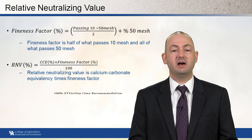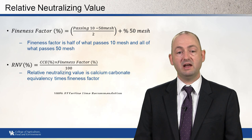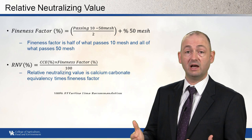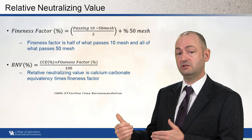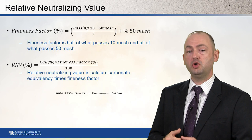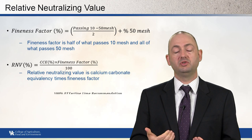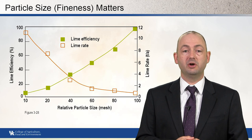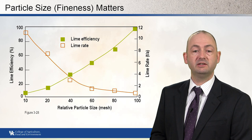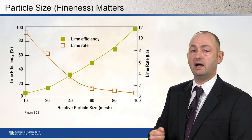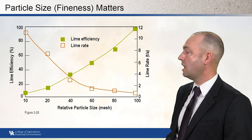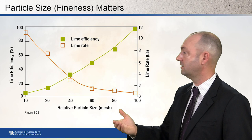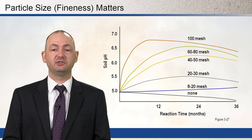The Relative Neutralizing Value (RNV) equals the CCE times the fineness factor, divided by 100. To get the bulk lime rate, we take 100% times the 100%-effective lime recommendation — derived from soil pH and buffer capacity — and divide it by the RNV. If using pure calcium carbonate (RNV = 100), you add the amount of the effective lime recommendation. If using something with an RNV of 50, you must add twice as much. A figure shows that as particle size increases, lime efficiency decreases and the lime rate must go up accordingly.